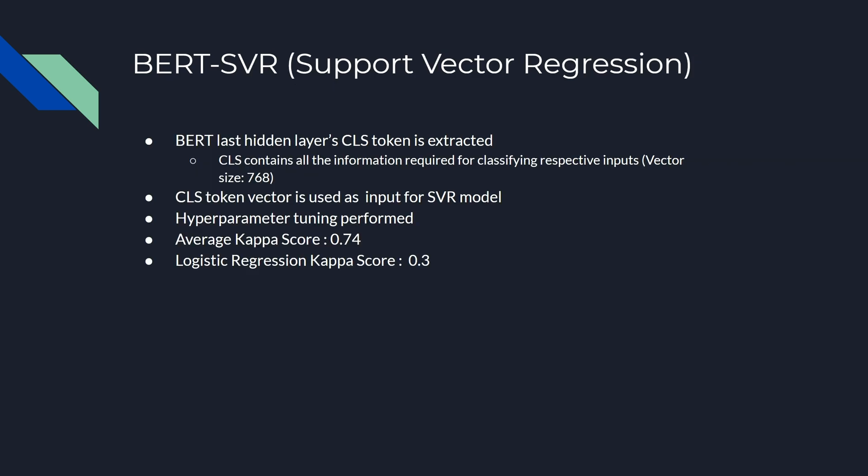We take the BERT output and use it as an input for the SVR model — support vector regression — after which we tune the hyperparameters and achieve an average kappa score of 0.74, compared to a logistic regression score of 0.3.